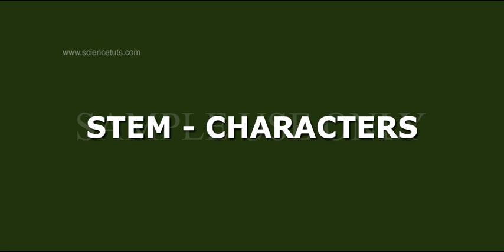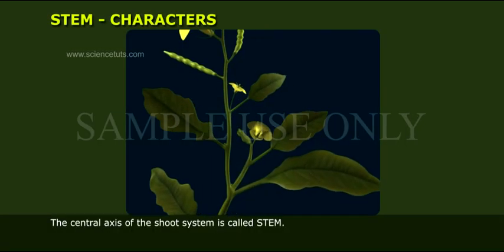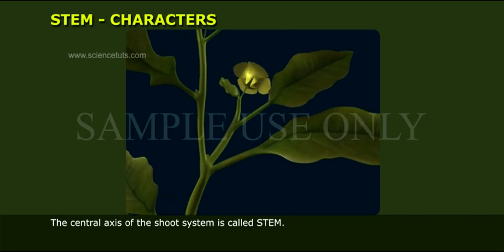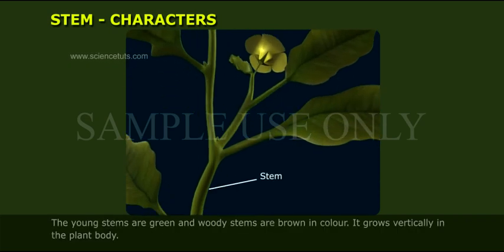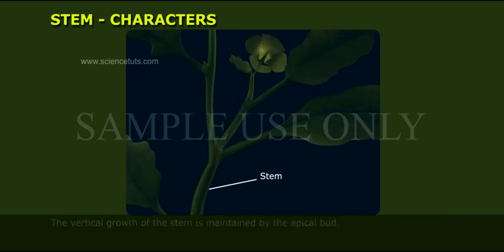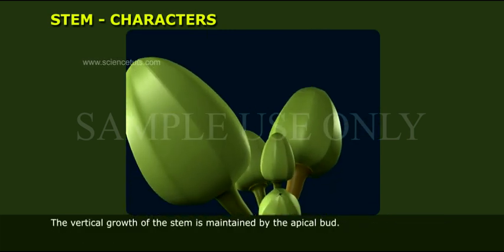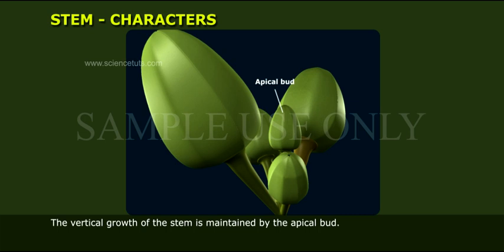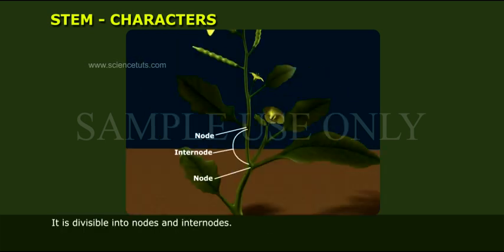Stem characters: The central axis of the shoot system is called the stem. The young stems are green and woody stems are brown in colour. It grows vertically in the plant body. The vertical growth of the stem is maintained by the apical bud.